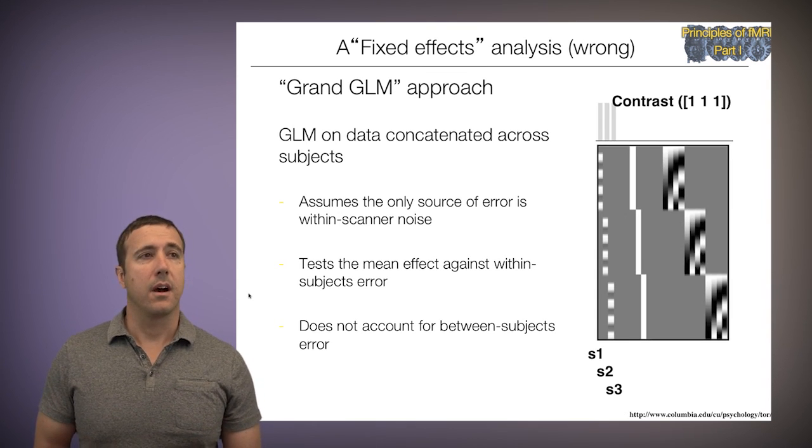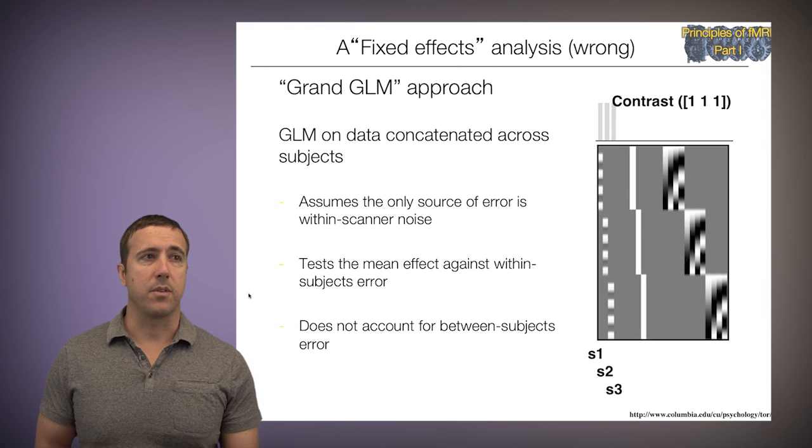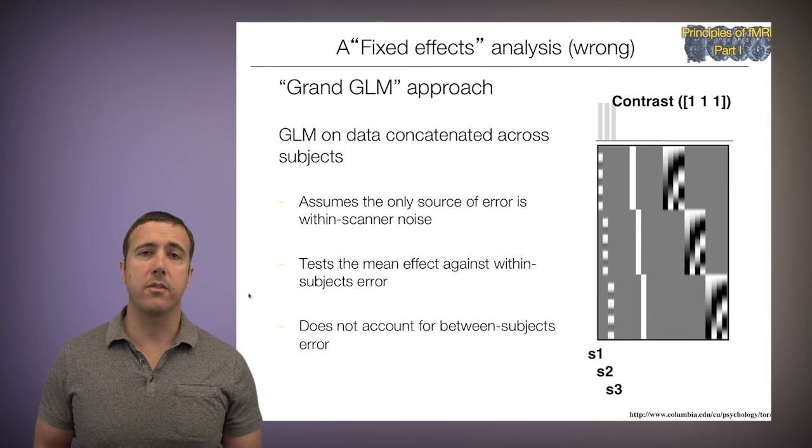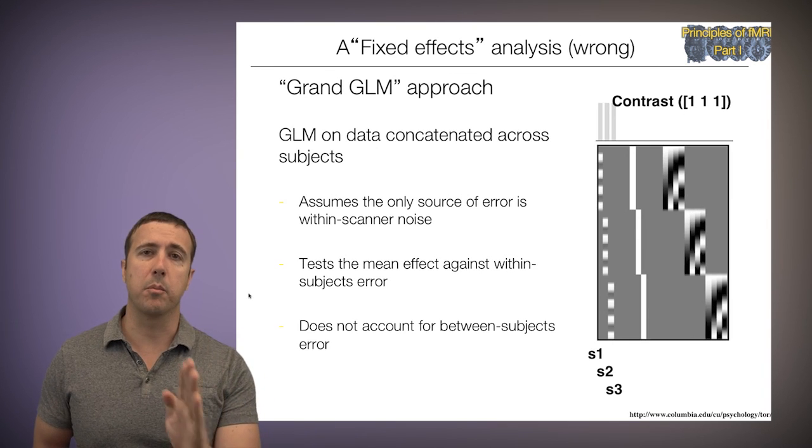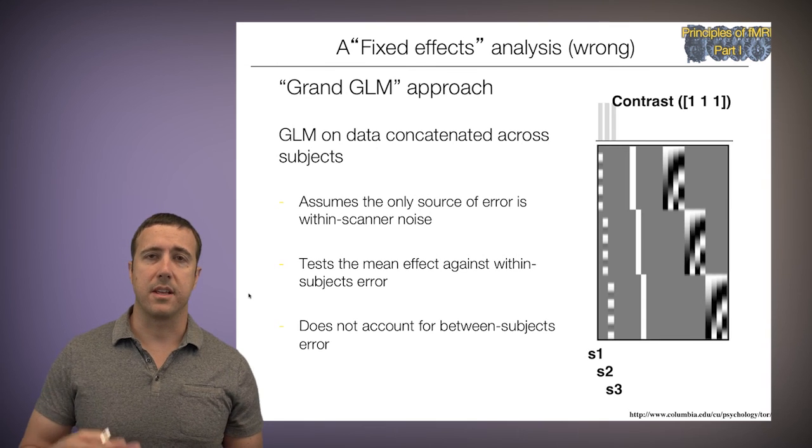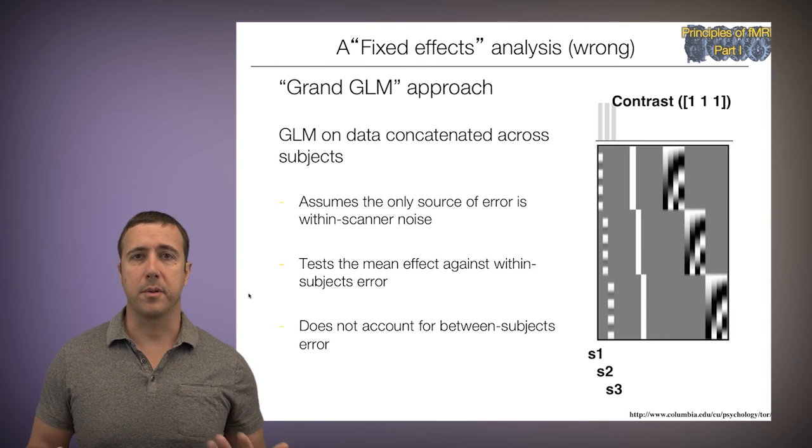So this tests the mean effect against that within-subject error, and it doesn't account for the individual differences at all. So even though I'm coming up with one estimate of the slope per subject, that doesn't get reflected in the error term, and I'm not making inferences that can be used to generalize to a population.